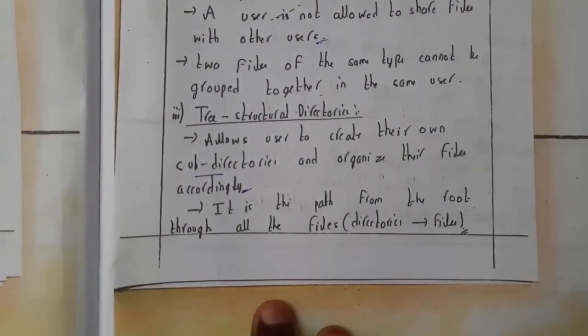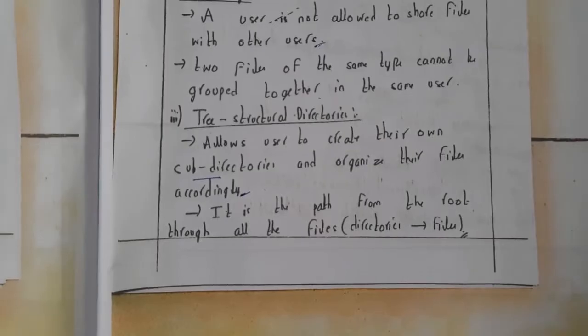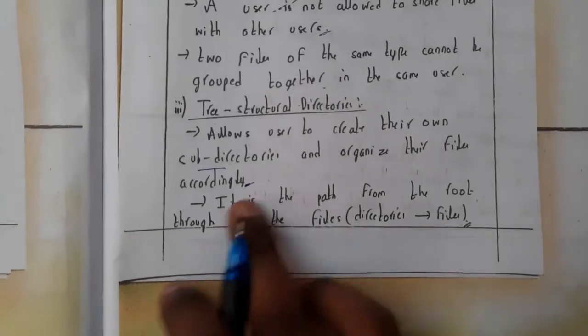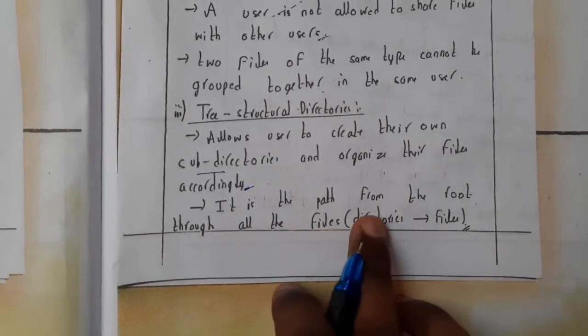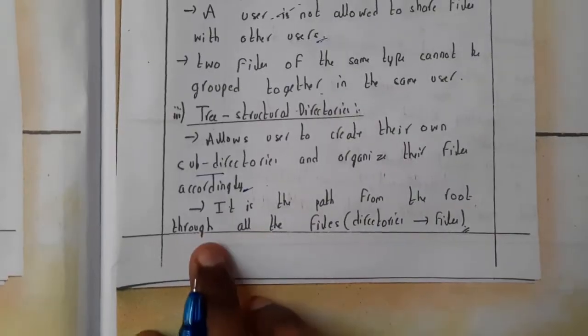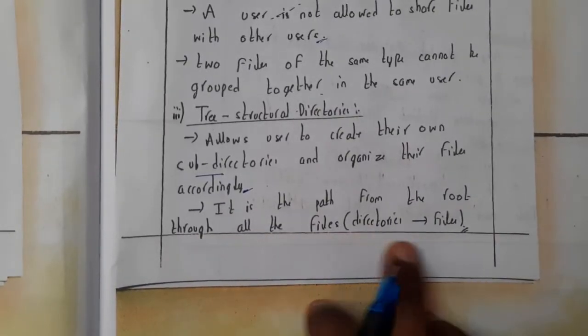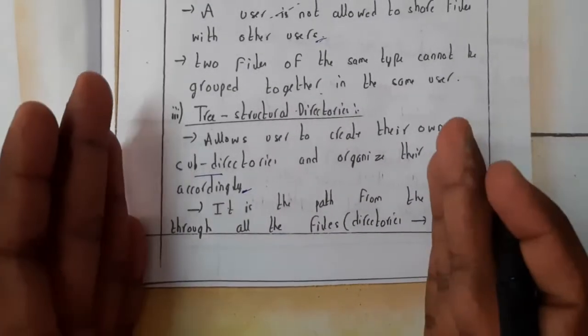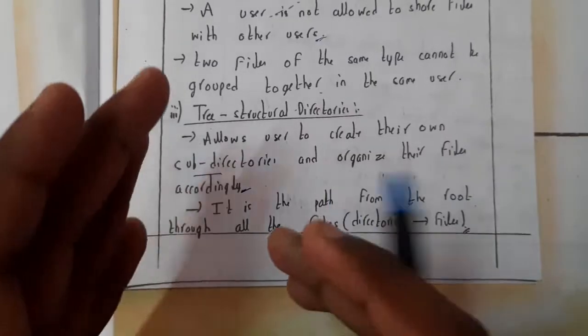I hope everyone got a small idea on this. Let's continue. It is the path from the root through all the files. That is nothing but directory to file. If you want to know the path, from one place to another, you'll be saying the stops, right?